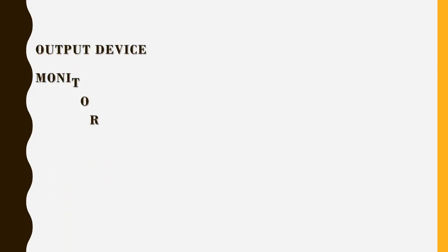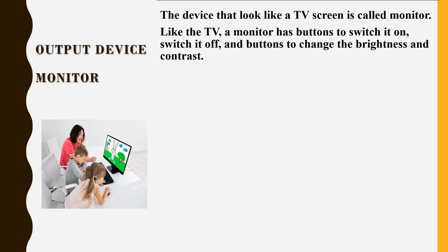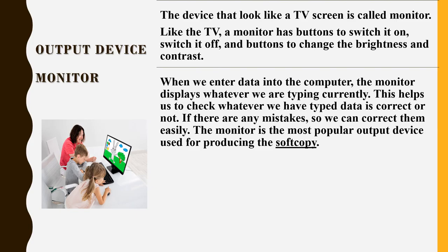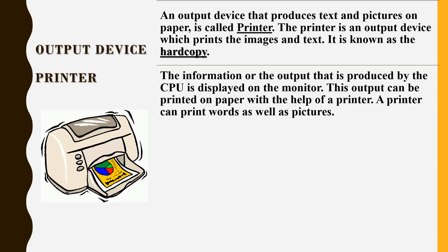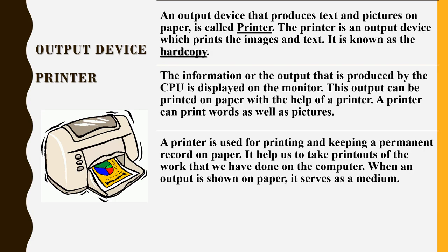Output Device — Monitor: The device that looks like a TV screen is called a monitor. Like the TV, a monitor has buttons to switch it on and off, and buttons to change the brightness and contrast. When we enter data into the computer, the monitor displays whatever we are currently typing. This helps us check whether the data we have typed is correct or not, and if there are any mistakes, we can correct them easily. The monitor is the most popular output device, used for producing the soft copy. The CPU processes the input and gives the output, which is displayed by the monitor. The monitor is connected to the CPU box with a cable.